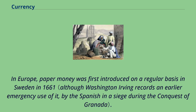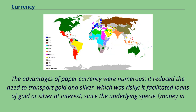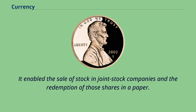In Europe, paper money was first introduced on a regular basis in Sweden in 1661. As Sweden was rich in copper, many copper coins were in circulation, but its relatively low value necessitated extraordinarily big coins, often weighing several kilograms. The advantages of paper currency were numerous: it reduced the need to transport gold and silver, which was risky; it facilitated loans of gold or silver at interest, since the underlying specie — money in the form of gold or silver coins — never left the possession of the lender until someone else redeemed the note; and it allowed a division of currency into credit and specie-backed forms. It enabled the sale of stock in joint stock companies and the redemption of those shares in paper.